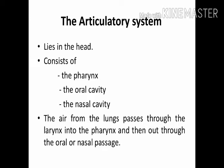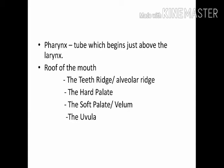The articulatory system comprises a few organs in our head and neck. It consists of the pharynx, the oral cavity or the mouth, and the nasal cavity. The air from the lungs passes through the larynx into the pharynx and then out through the oral or the nasal passage. The pharynx is a tube which begins just above the larynx. Its top end is divided into two: one part being the back of the mouth and the other being the beginning of the way through the nasal cavity.